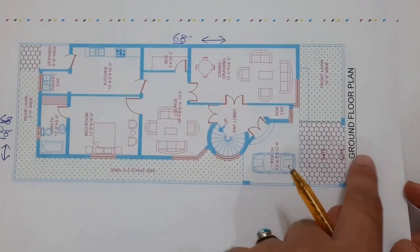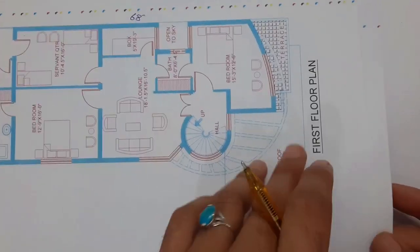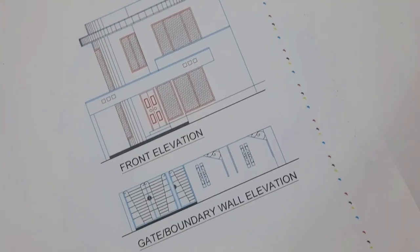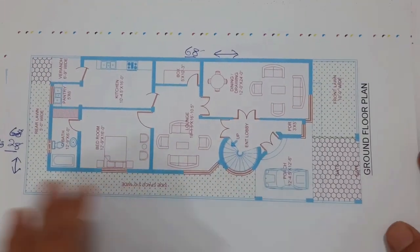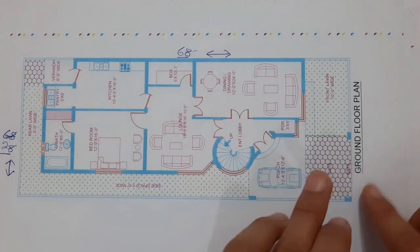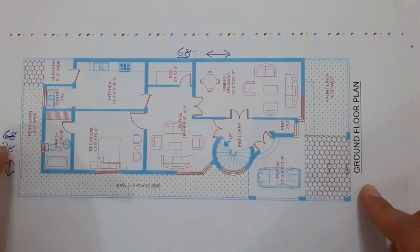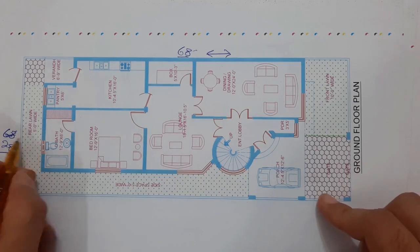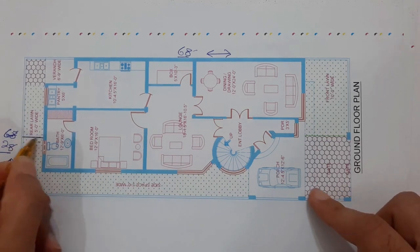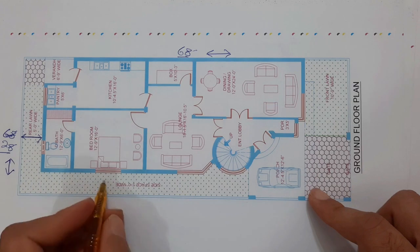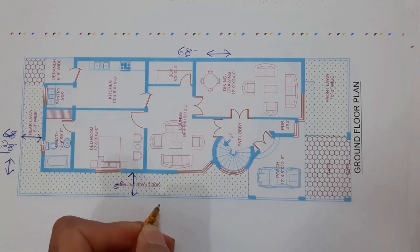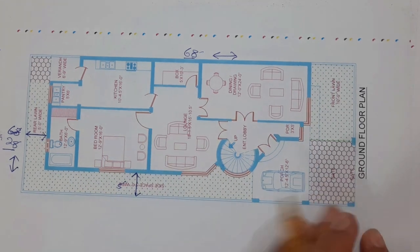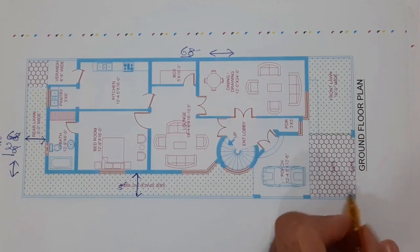Let's get started guys. You can see this is the ground floor plan, this is the first floor plan, and the last one is the front elevation. If this video is simple for you, you may like this video. This is the ground floor plan clearly. Plot size is 28 by 68 feet. Backside passage is 5 feet and the side is also 5 feet. This is the main entrance main gate.